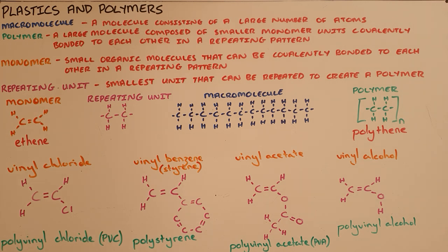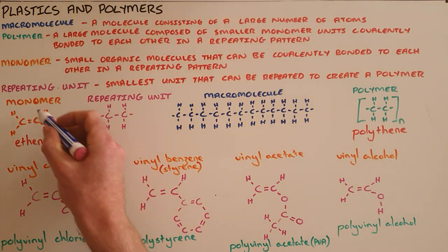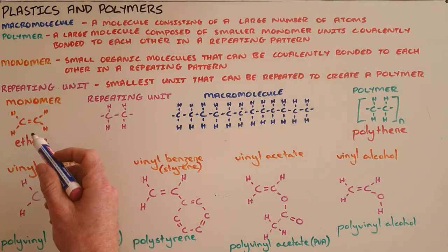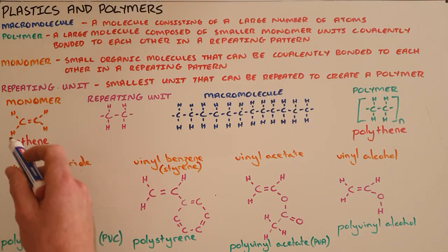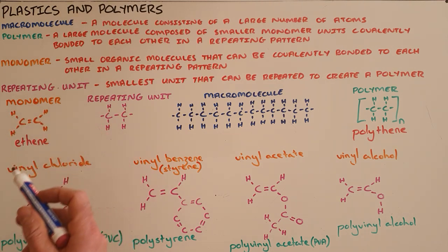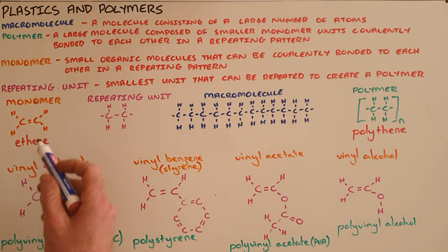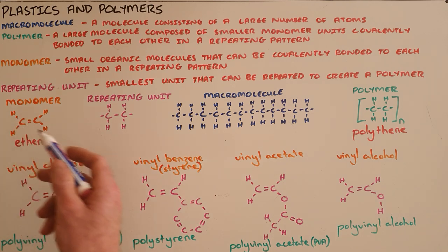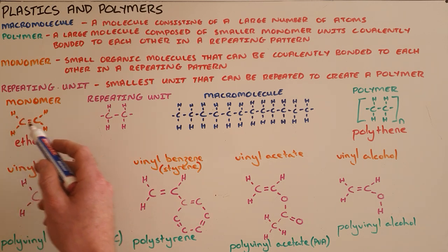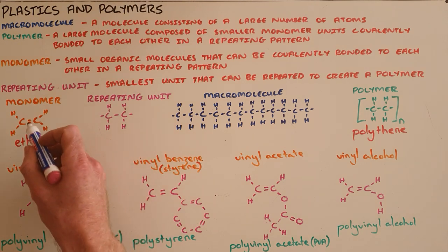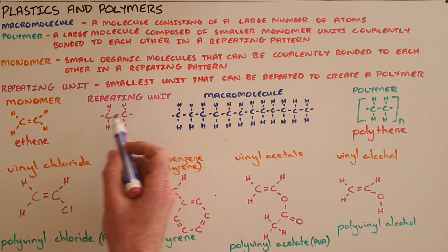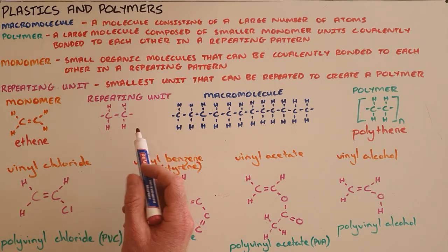The way that this works is that you would start with a monomer which, as the definition states, is an organic molecule in itself, but what makes it special or unique is the fact that it can become a repeating unit. So here we have a monomer called ethene, which is two carbons double bonded to each other with four hydrogens, but that can become a repeating unit by breaking the double bond between those two carbons. When that happens, each carbon is now looking to form another bond.